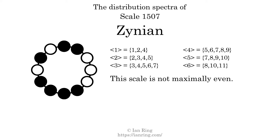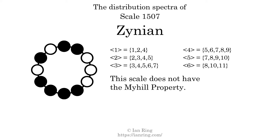The highest spectrum width is four. Since this is greater than one, we know that this scale is not maximally even. If every spectrum has exactly two specific intervals, we call that the Myhill property. This scale does not have the Myhill property. Since the generic interval ranges overlap, this scale is an improper scale.